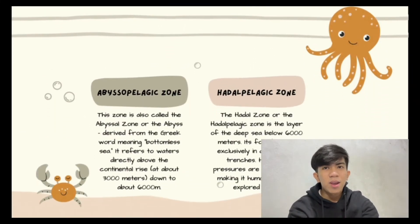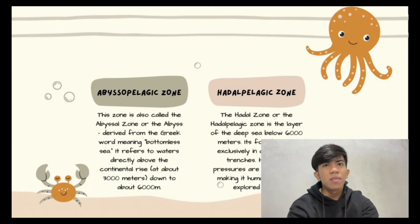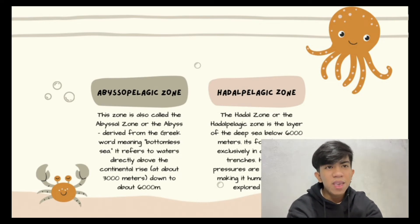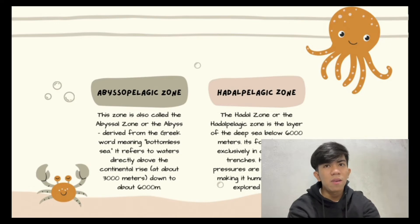The next one is abyssopelagic, from 4,000 meters down to above the ocean floor. No light whatsoever penetrates to this depth, and most creatures are blind and colorless. The last one is hadopelagic — the deep water in ocean trenches. The name is derived from Hades, the classical Greek underworld. This zone is 90% unknown, and very few species are known to live here.